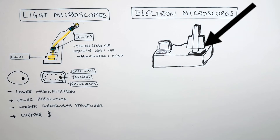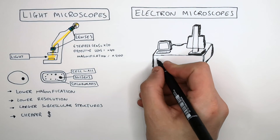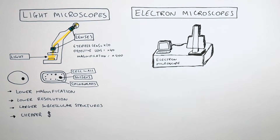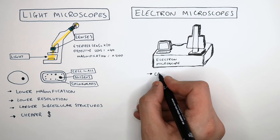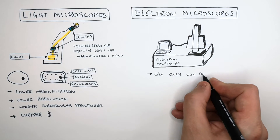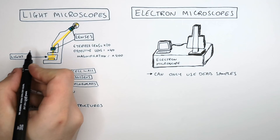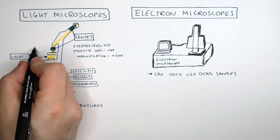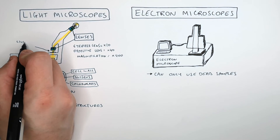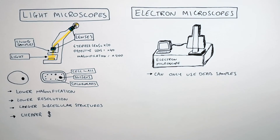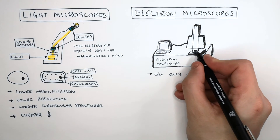This here is an electron microscope. It requires computers and a lot of space. An electron microscope can only use dead samples — you cannot use living samples on an electron microscope, whereas on a light microscope you can use living samples.